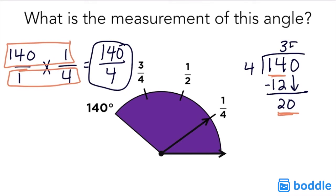I can make 5 groups of 4. Then I subtract my 20 and I have my final answer of 35. What is the measurement of this angle? 35 degrees.